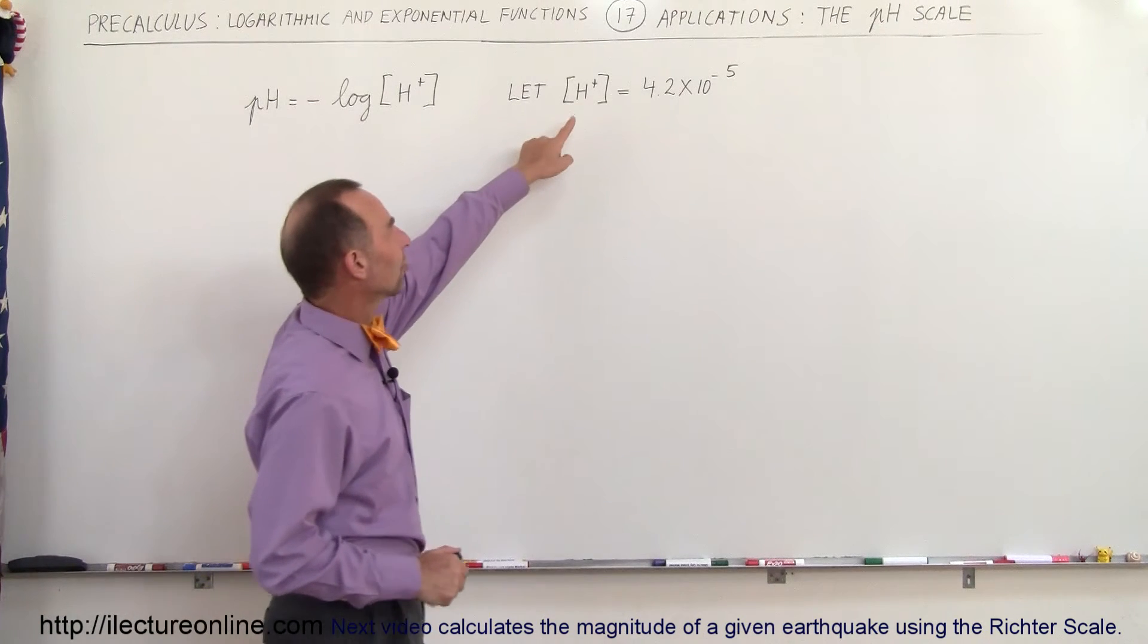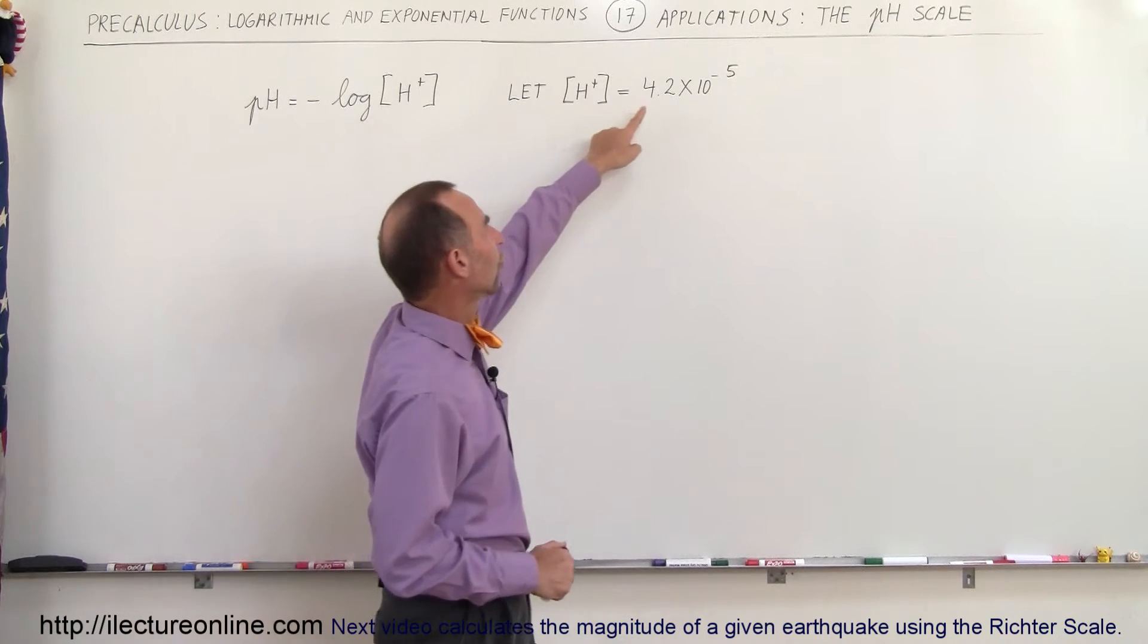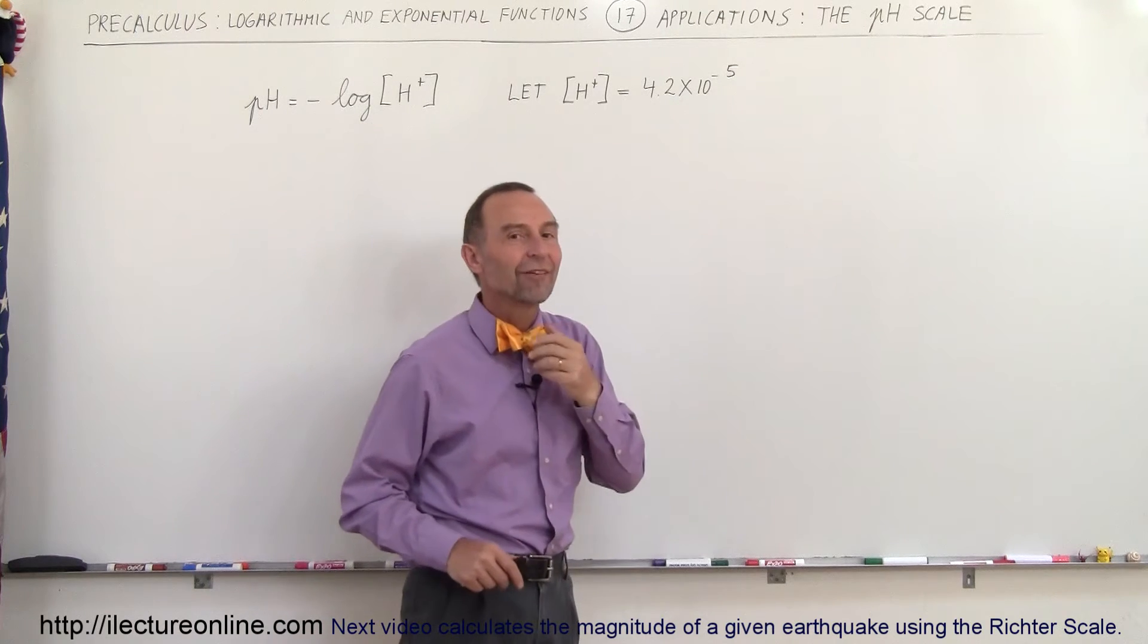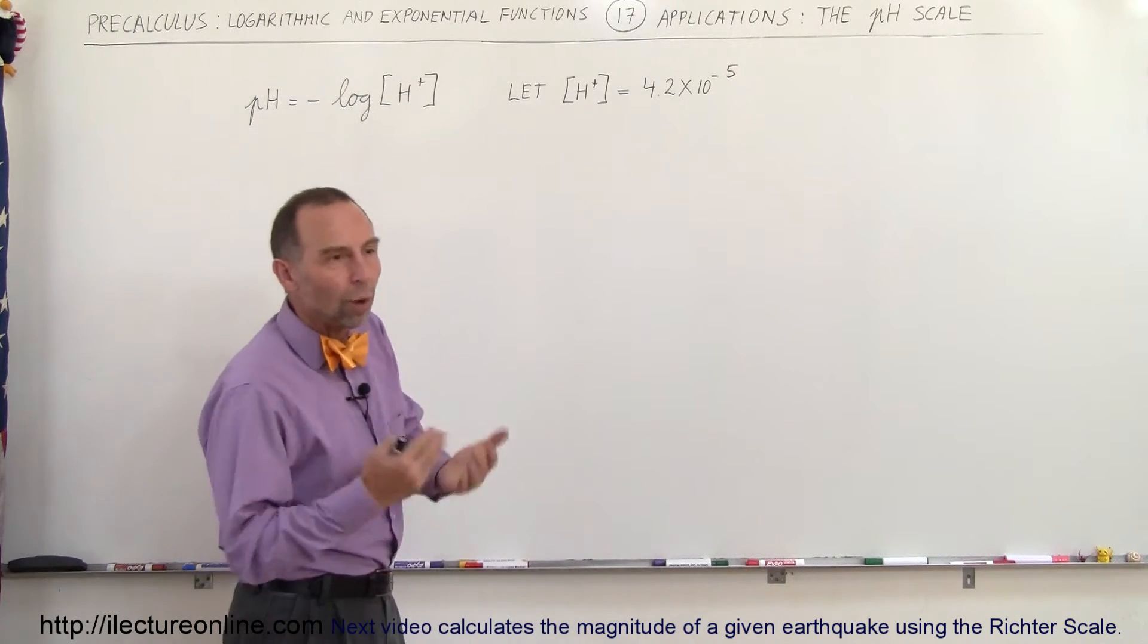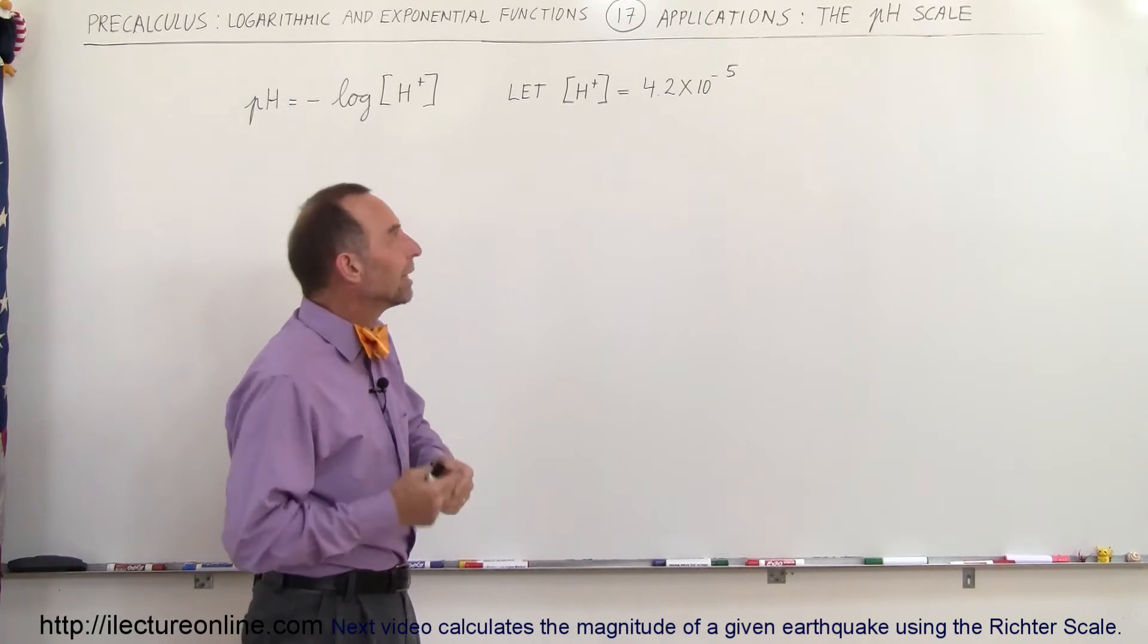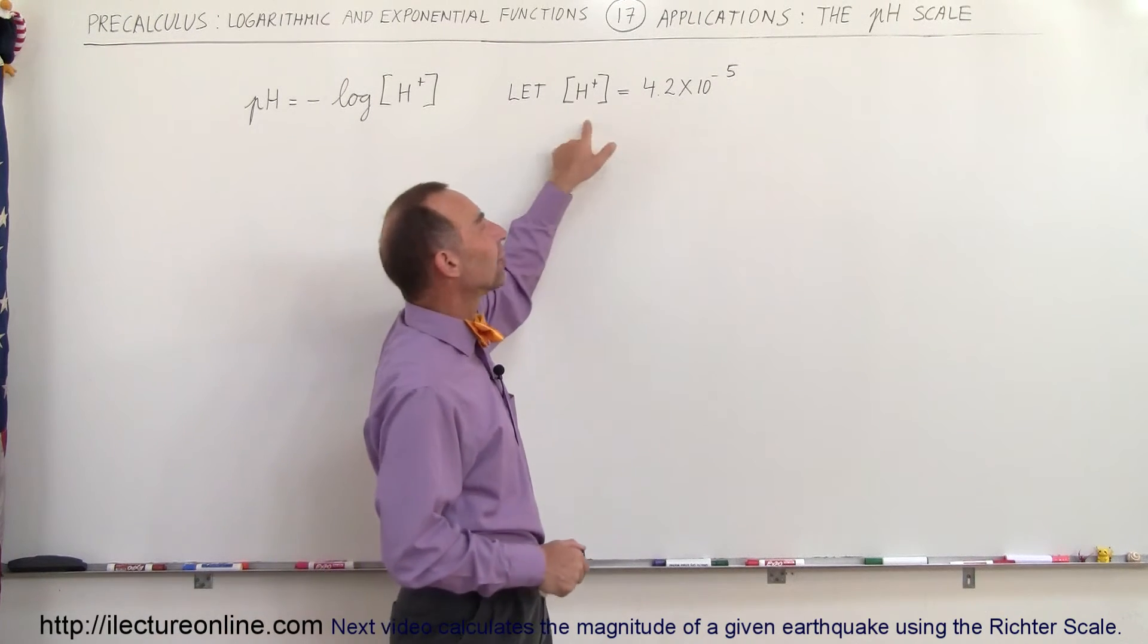If, for example, the hydrogen concentration in the solution is 4.2 times 10 to the minus 5, which means for every one water molecule in the solution there would be this many hydrogen ions.